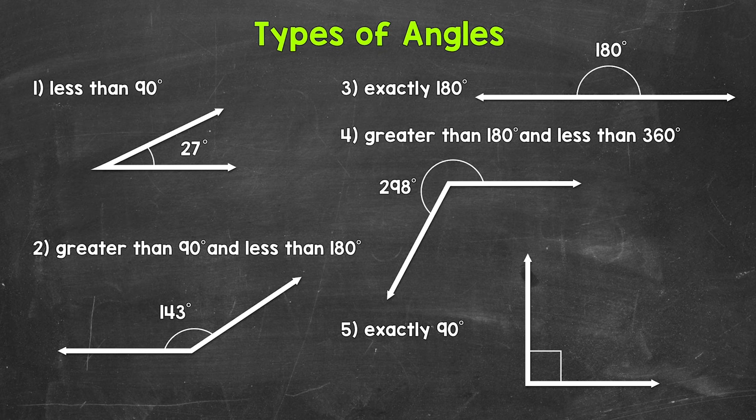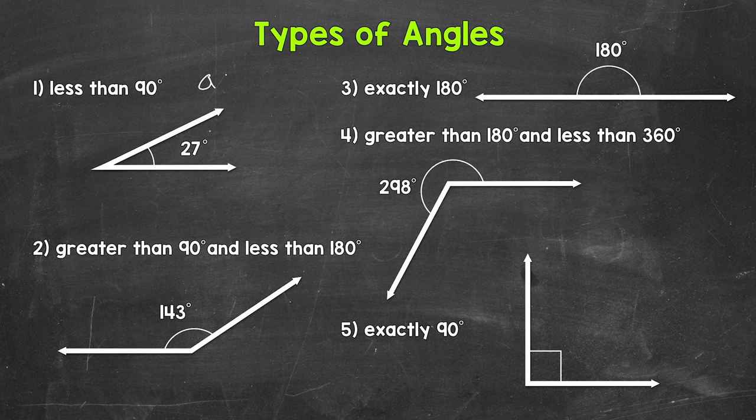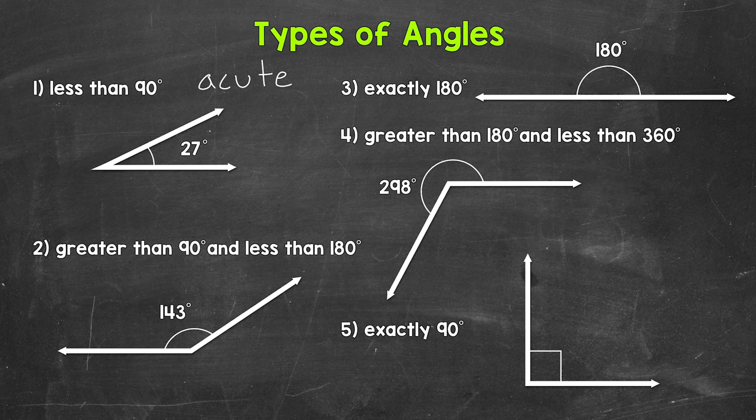Let's jump into number one, where we have an angle that measures 27 degrees. So this is an example of an acute angle. Acute angles are less than 90 degrees.